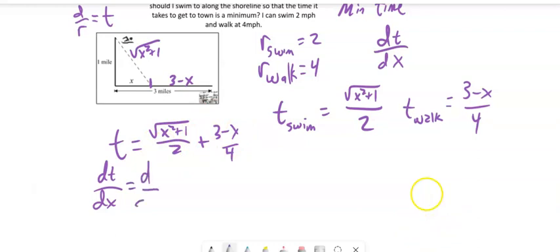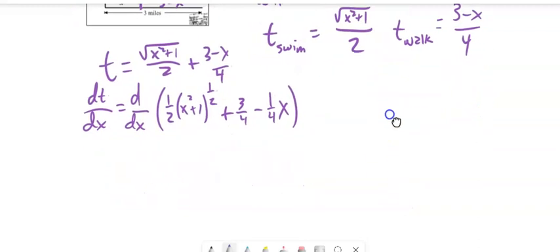So before I do this, I'm going to clean this up a little bit. I'm going to think of this as 1 half times X squared plus 1 to the 1 half. That'll be easy to take that derivative. Plus, and then notice these are both divided by 4. So 3 fourths minus 1 fourth X.